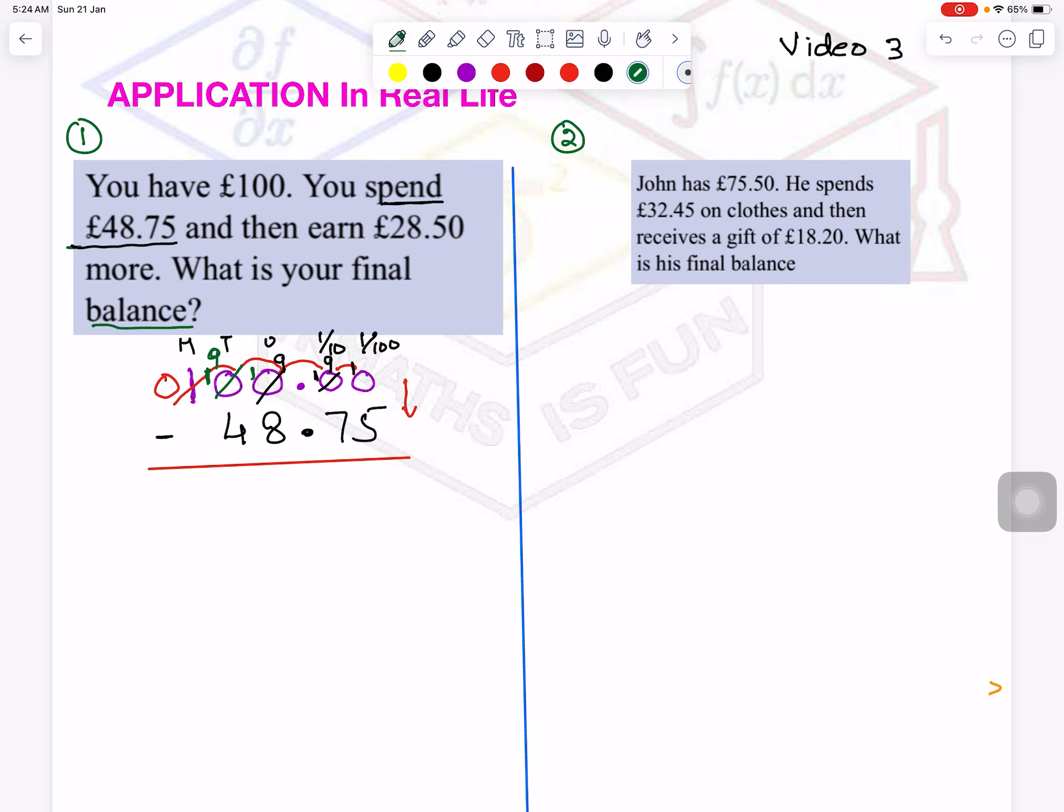Now, 10 minus 5 is 5. Now here it is 9 minus 7, so it will be 2. Decimal will come here. Now this is 9 and this is 8, 9 minus 8 is 1. Now this is 9, this is 4, 9 minus 4 is 5. Then what is left here? 0. So you write here 0. You don't write here. It doesn't matter. Mostly we do not write it.